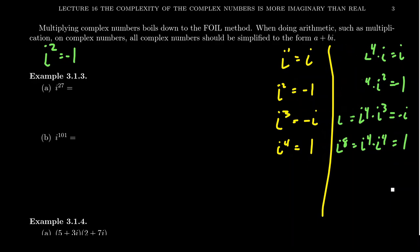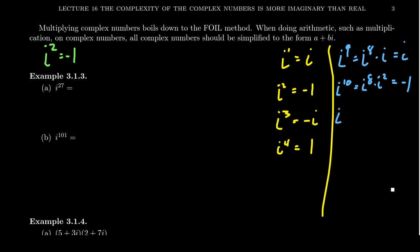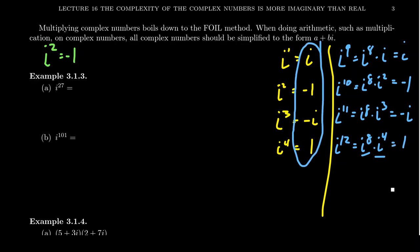That's actually not a coincidence. Picking up where we left off: i to the ninth is i to the eighth times i — i to the eighth is one, so this is i. i to the tenth is i to the eighth times i squared, giving negative one. i to the eleventh equals i to the eighth times i cubed, and since i to the eighth is one, we get negative i again. And i to the twelfth equals i to the eighth times i to the fourth, both of which are one, so you get one.